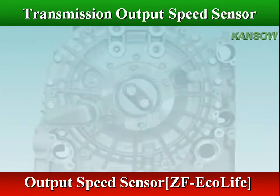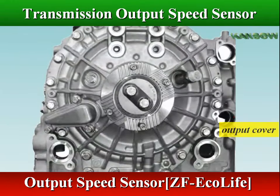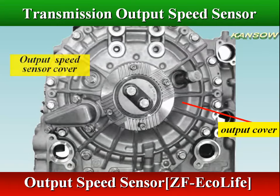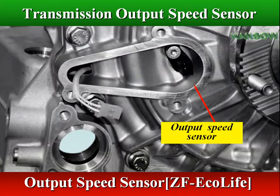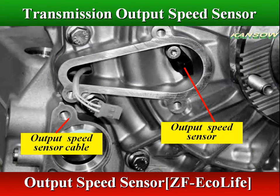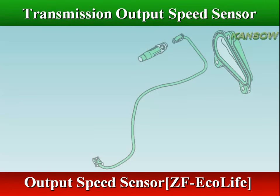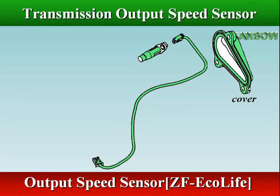In ZF ECOMAT 2 transmissions, the output speed sensor is externally mounted in the output cover and directed at the inductive sensor ring on planet carrier-3.